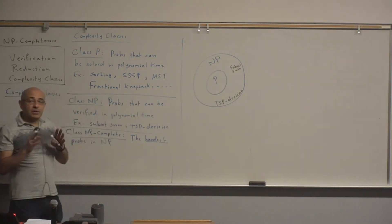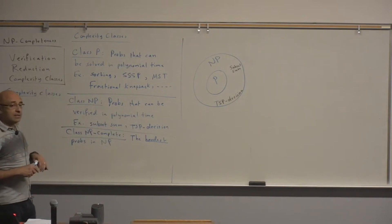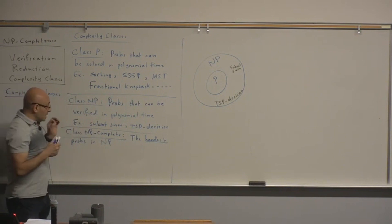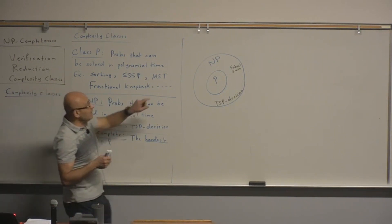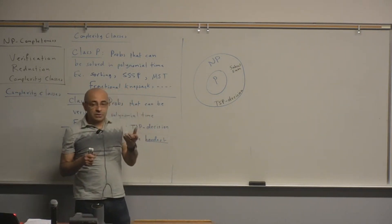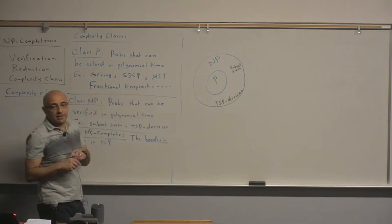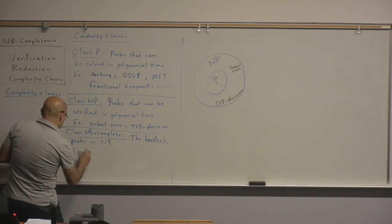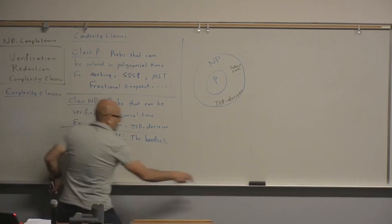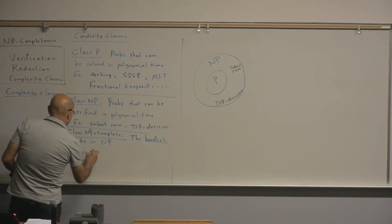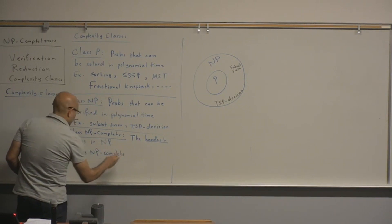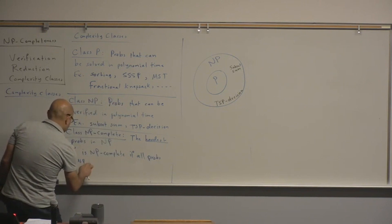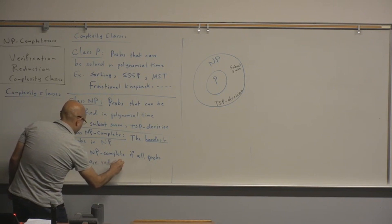This may not make much sense until we present the concept of reducibility, which is the main concept we will be focusing on today. A problem is NP-complete if any problem in NP is reducible to that problem. More precisely, X is NP-complete if all problems in NP are reducible to X.